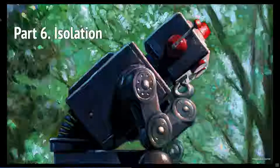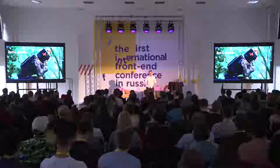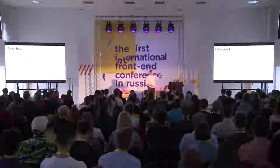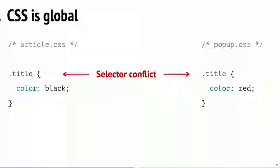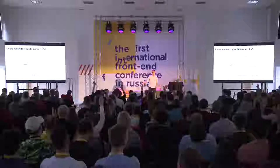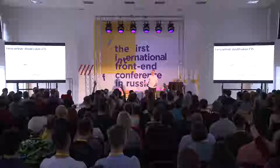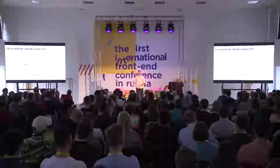We've normalized our CSS base. Now we need to write our styles. It's very easy to make a mistake. My favorite mistake in CSS is when you use the same selector for different components — it happens especially in big teams. There are a lot of solutions. Who uses BEM? CSS Modules? CSS-in-JS?